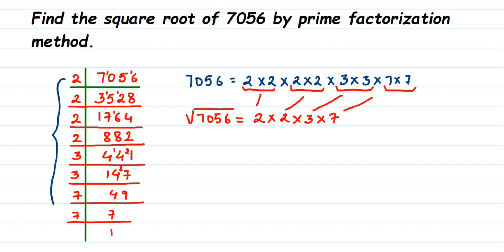Taking one factor from each pair and multiplying: 2 × 2 = 4, 4 × 3 = 12, 12 × 7 = 84. So the square root of 7056 is 84.